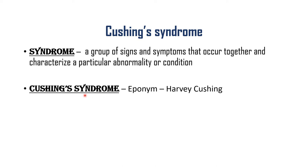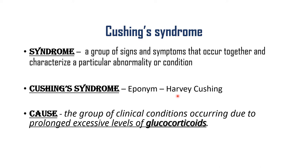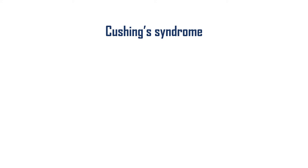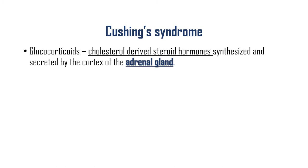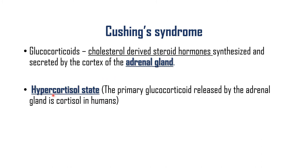The term Cushing's syndrome is an eponym used to describe a group of signs and symptoms that was first identified by Harvey Cushing. Cushing's syndrome is seen due to prolonged excessive levels of glucocorticoids — it is a group of clinical conditions that occur due to prolonged excessive levels of glucocorticoids. Glucocorticoids are cholesterol-derived steroid hormones synthesized and secreted by the adrenal cortex.